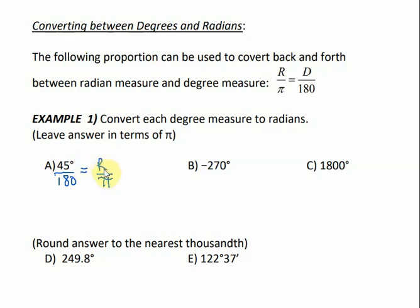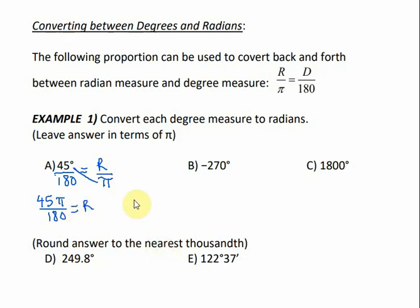Since we're trying to get R by itself, we're not going to cross-multiply the R, but we are going to get rid of pi by halfway cross-multiplying that one part. So that gives us 45pi over 180 equals R. Of course, that needs to be simplified. 45 over 180 would reduce to one-fourth, which would be the same thing as pi over 4. So pi over 4 is R.